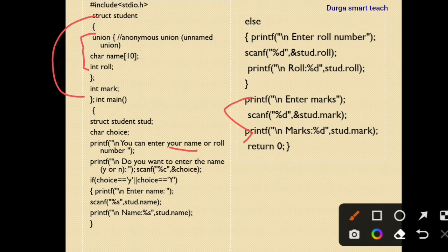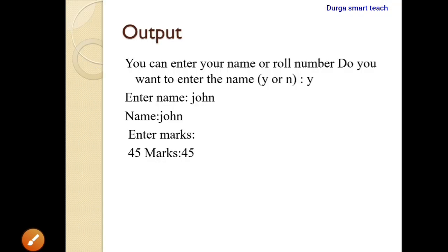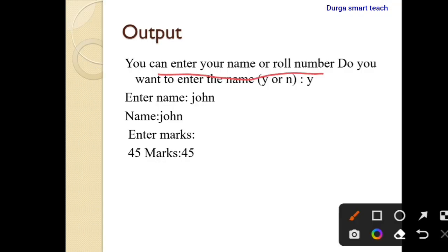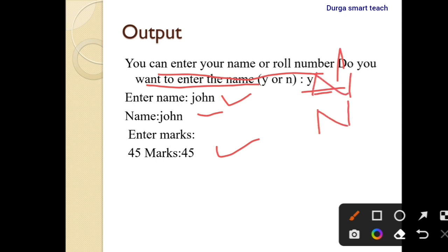Without unions inside structures, you would use structure variables directly, but structures allocate memory for every individual variable. Looking at the output: when the user is asked 'Do you want to enter the name?' and answers yes, name is 'John' and marks are 45. If the user answers no, the roll number — for example 101 — is entered, and marks of 45 are displayed. Unions are used to enter either name or roll number to save memory.